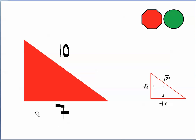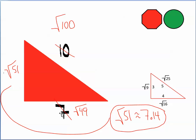Let's calculate the length of this leg. I can rewrite the hypotenuse of 10 as the square root of 100, and I can rewrite the leg 7 as the square root of 49. Now I take 100, subtract 49, and get 51. Put 51 under a square root sign, and the exact length of this leg is the square root of 51. Correct to two decimal places, the square root of 51 is 7.14. That sounds reasonable because the square root of 49 is exactly 7, so the square root of 51 being slightly more than 7 makes sense.